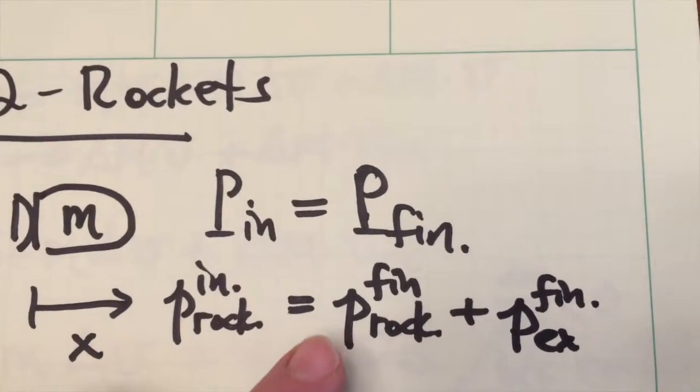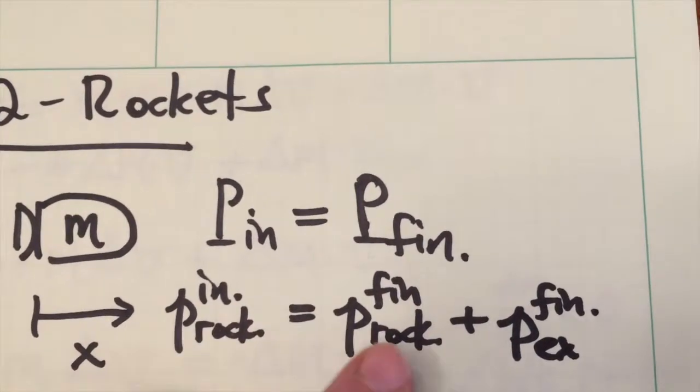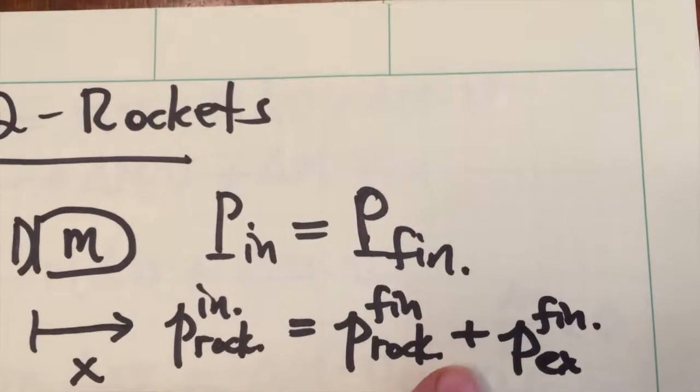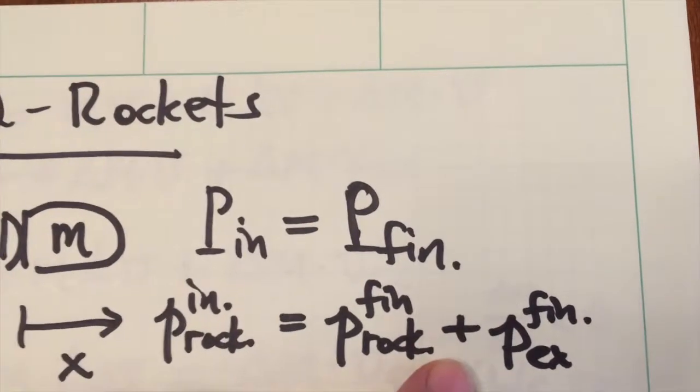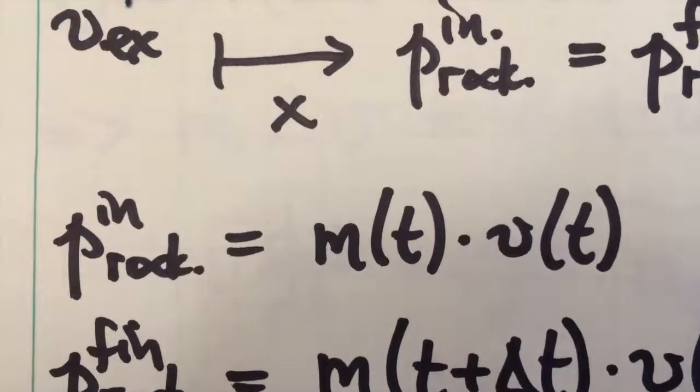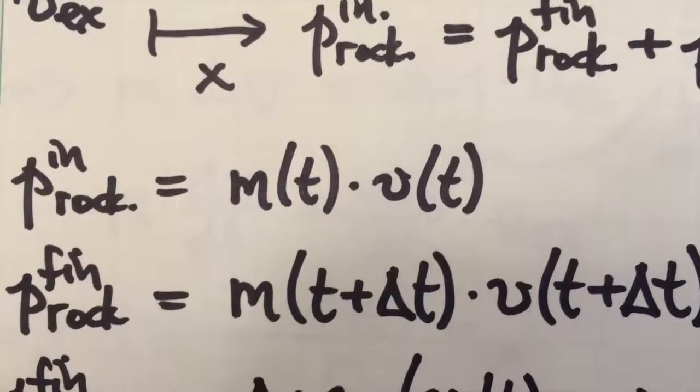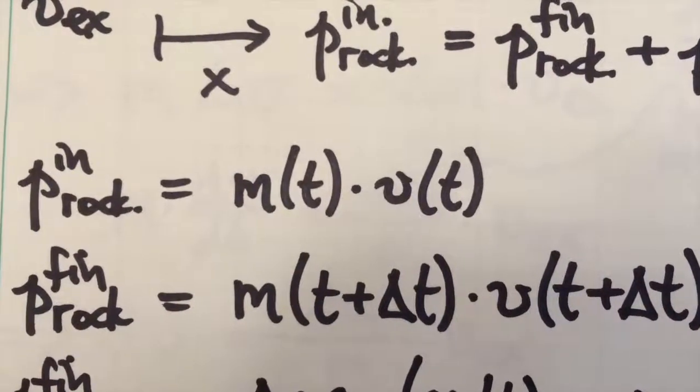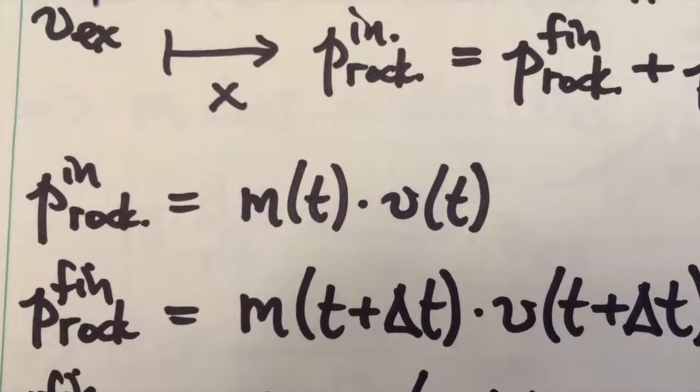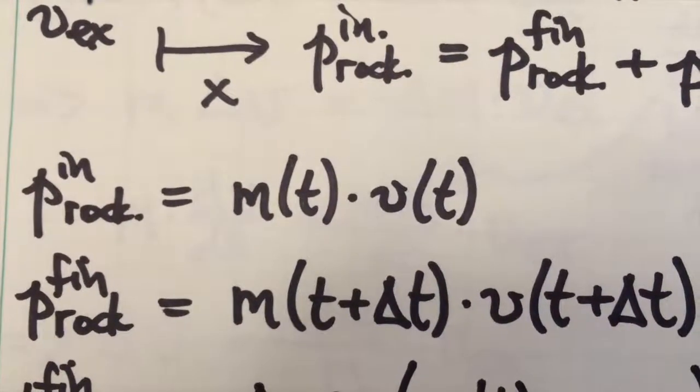This is set equal to the final momentum of the rocket plus the momentum of the exhaust that has now been ejected out the back. The rocket's initial momentum is its initial mass m(t) times its initial velocity v(t), and its final momentum is the mass at t plus delta t times the velocity at t plus delta t.